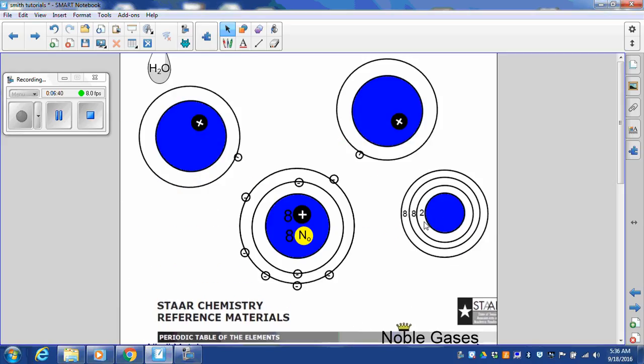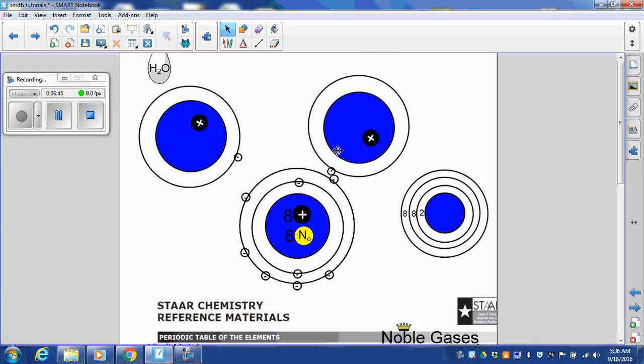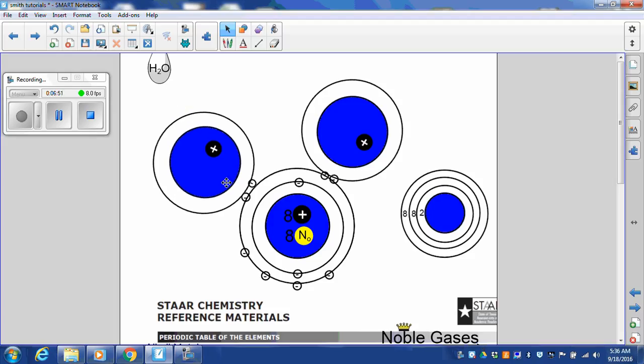The first ring wants two. Hydrogen has one. It hooks on with oxygen. Now it's happy. Now it has two. The same thing with this hydrogen.